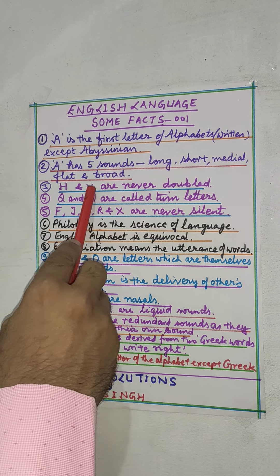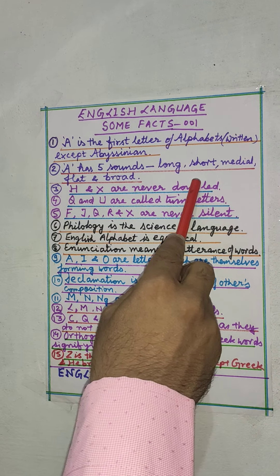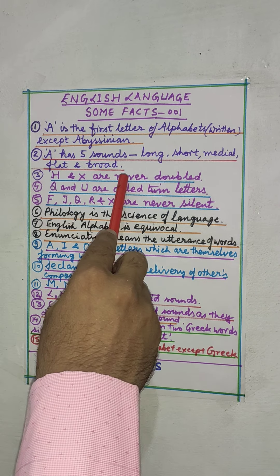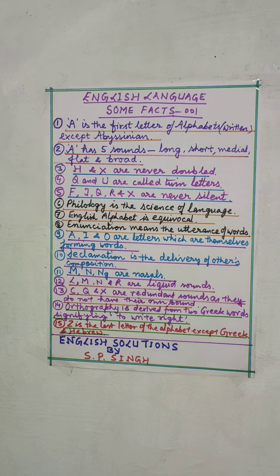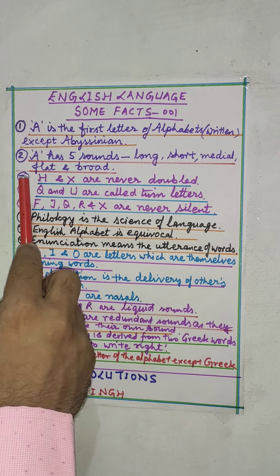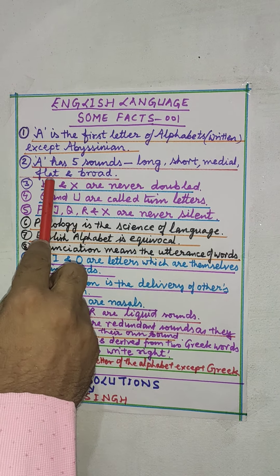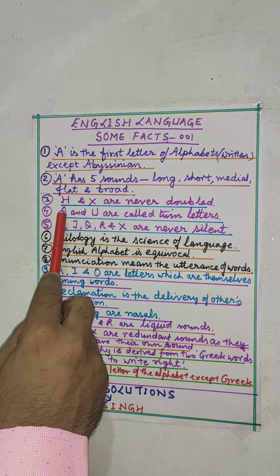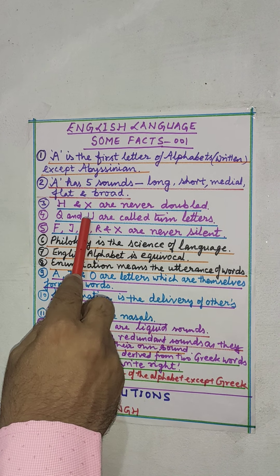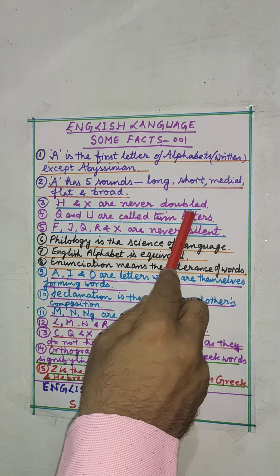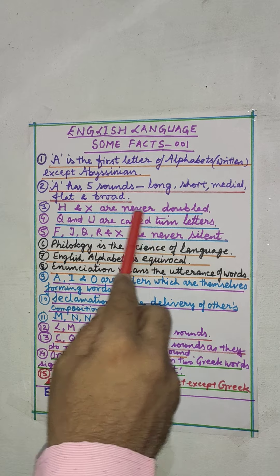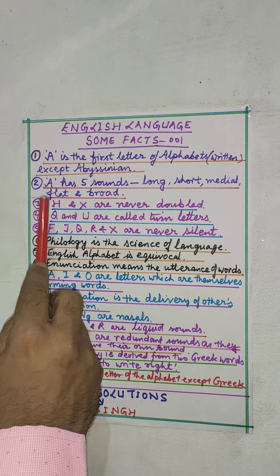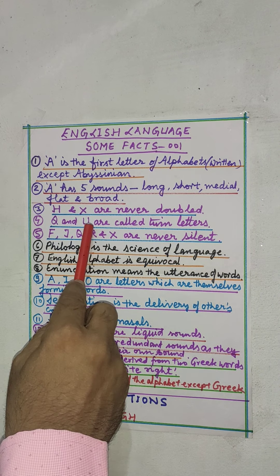H and X are never doubled, so to avoid spelling errors, you have to remember that H and X are never doubled. The next point is that Q and U are called twin letters, because in most words you will find that Q is followed by U.